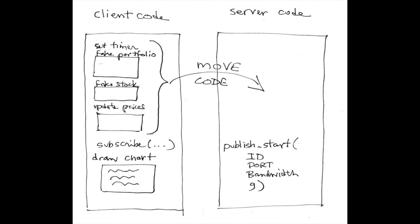All we're going to do is add one line of code called subscribe to the server, where we give it our ID and IP address. Once it connects, it starts receiving our data structure every refresh cycle, and then the screen is refreshed to match the data structures that were just updated in the background.